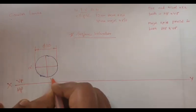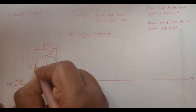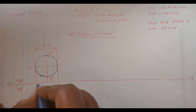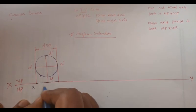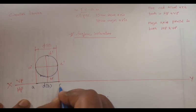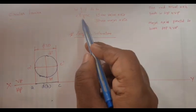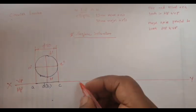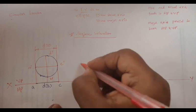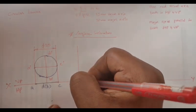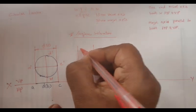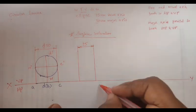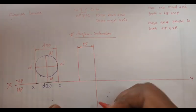Let's project those lines to get the top view. The top view should be drawn with a thick line. A is seen, D is seen, B is not seen, C is seen. When projected, it looks like an ellipse. We are going to draw a line and the distance between the two lines is going to be 15mm.